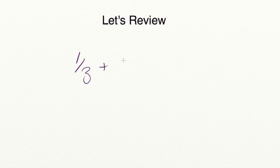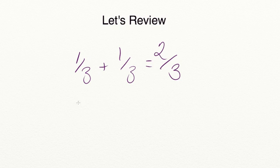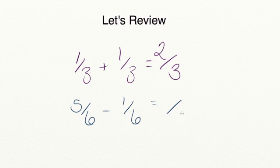Let's take a moment to review what you've learned in today's lesson. When you're adding or subtracting fractions with a common or like denominator, you're going to keep the denominator the same and either add or subtract the numerators. For example, one third plus one third — the denominator stays thirds and one plus one equals two. When you're subtracting, like five sixths minus one sixth, you keep the denominator the same and five minus one equals four sixths.